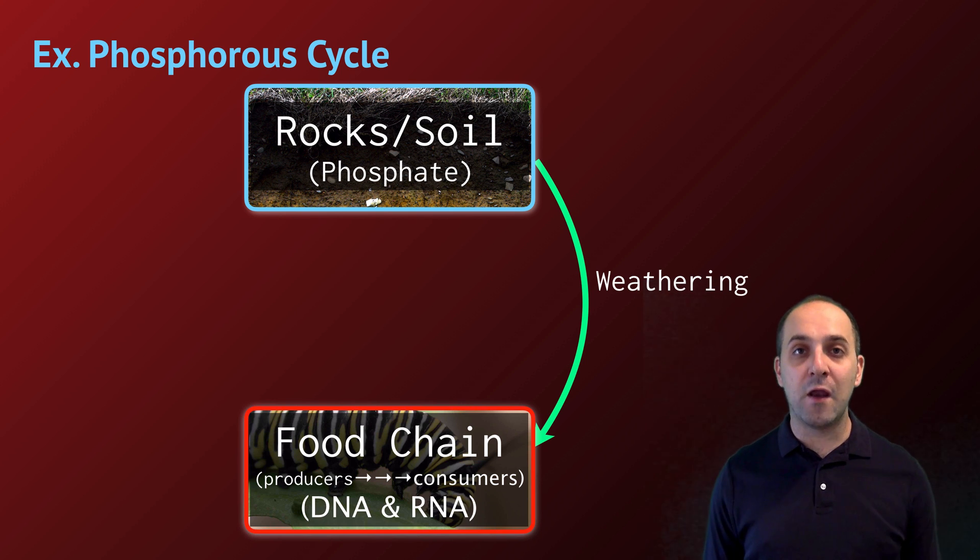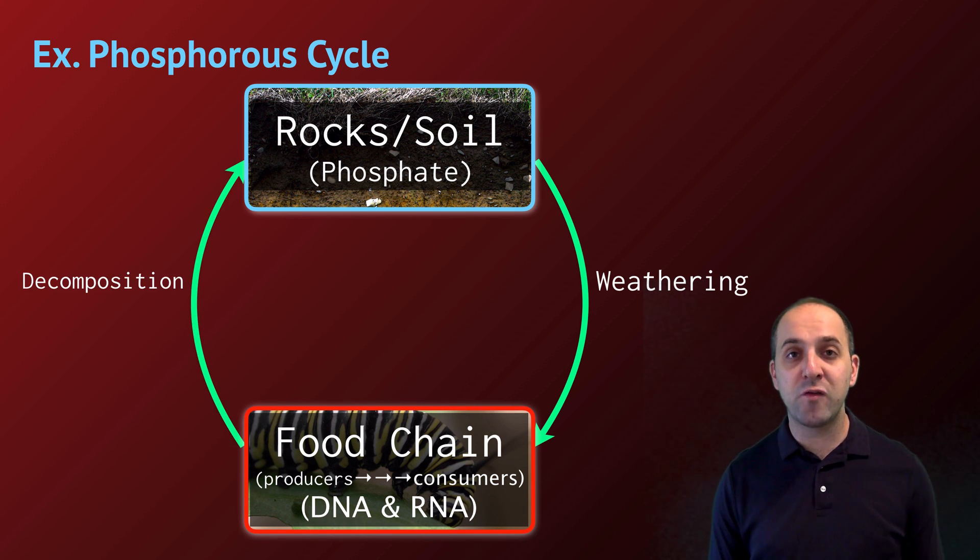And then nitrogen can be returned back into the abiotic atmospheric reservoir through the process of denitrification, which is accomplished by another group of bacteria called denitrifying bacteria, when living systems excrete nitrogenous waste or when they pass away and are decomposed. The phosphorus cycle has some interesting differences compared to the cycles that we've talked about up until now. Specifically, the main abiotic reservoir for phosphorus is phosphate in rocks and in soil.